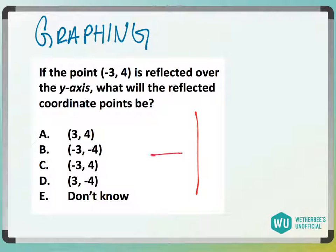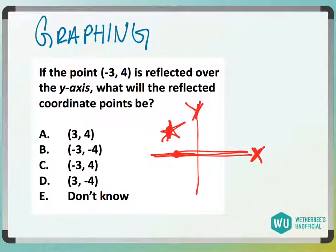All right, so think of if we actually graph this point. This is the y-axis, and this is the x-axis. Negative 3, comma 4 would be up here. The answer choices are all threes and fours, so it's really just more about the signs.